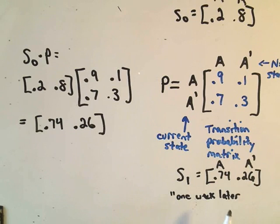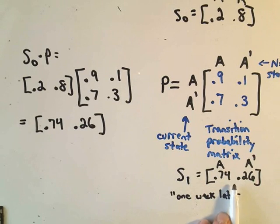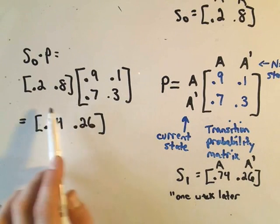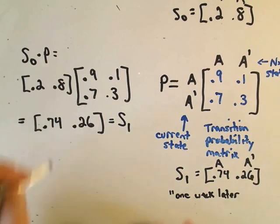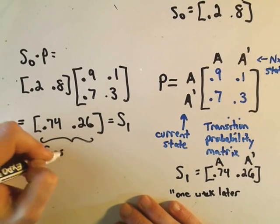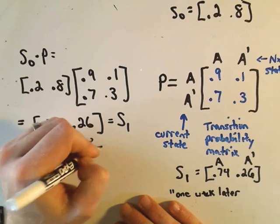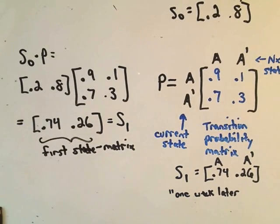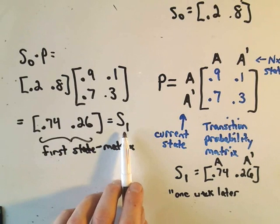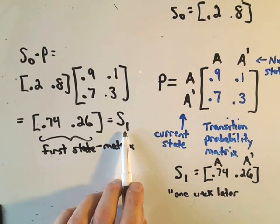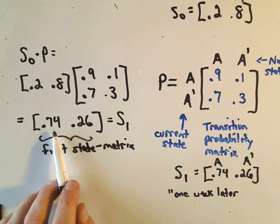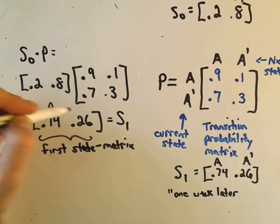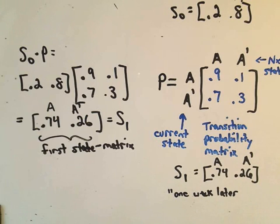So the moral of the story, we calculated the market share after one week by using this little tree diagram. What I'm trying to illustrate is really we can just do a matrix multiplication, and this is going to represent the first state matrix. And again, this first state matrix says that if you do launch this ad campaign, the next time people go to buy orange juice at random, you can expect to have 74% of the market share for brand A and 26% for some other brand.